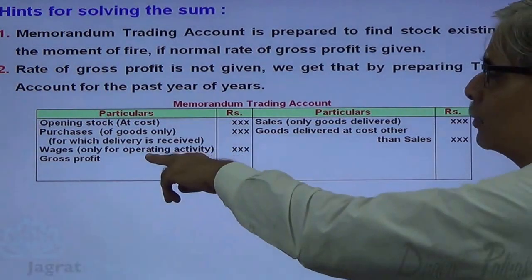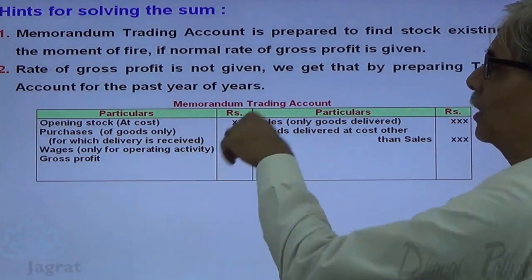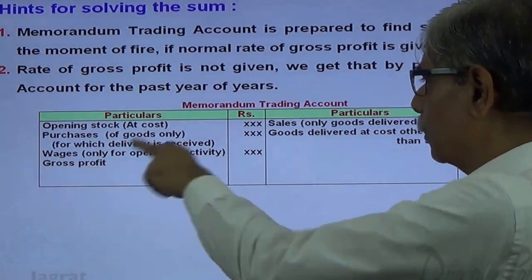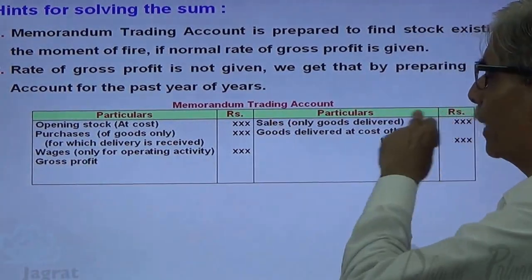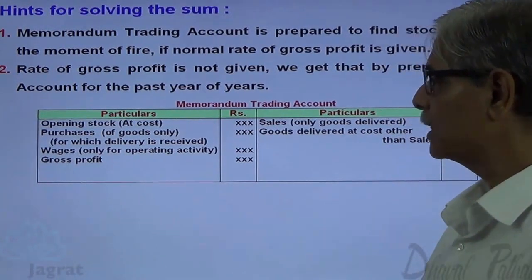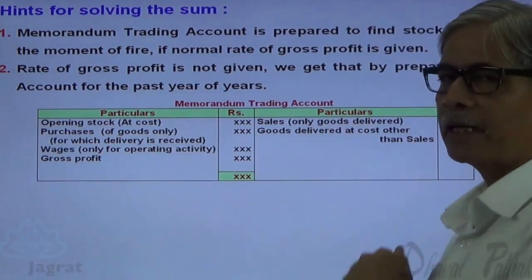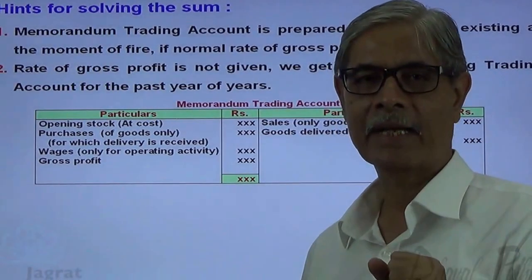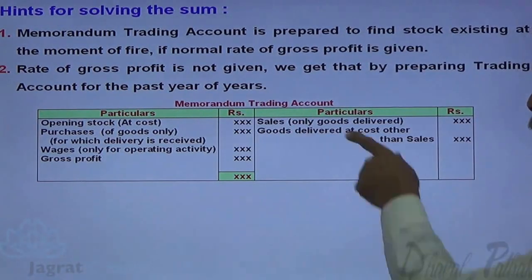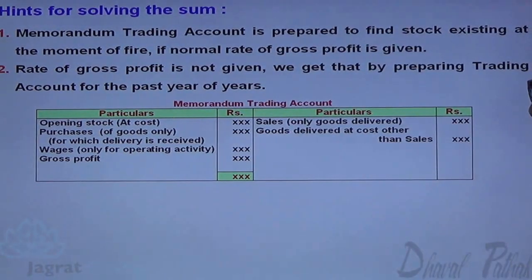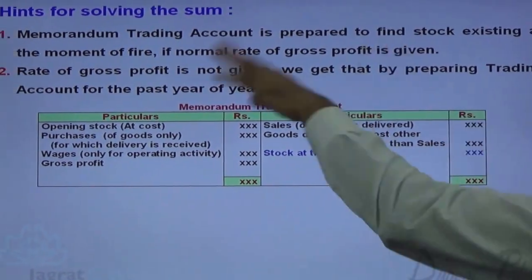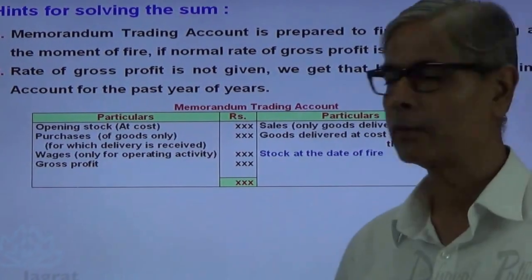These are the various ways by which goods go out, recorded at cost or deducted from purchases. The rate of gross profit worked out on the basis of the past trading account is applied to the sales till the date of fire — this is how gross profit is recorded in the memorandum trading account. The total of the debit side minus these goods outgoings gives you the stock at the moment of fire.